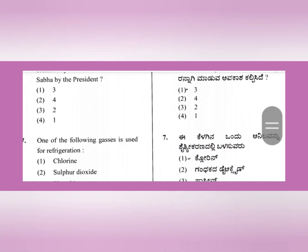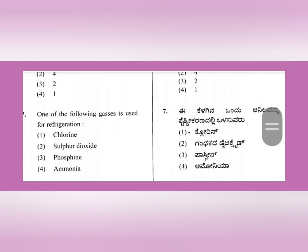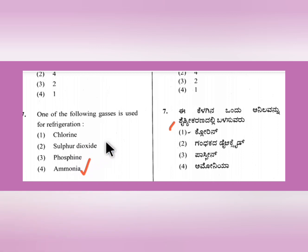Question 7: One of the following gases is used for refrigeration. The answer is ammonia - ammonia is used in refrigeration. We can also expect other science questions. There are many reference books for GPSTR and TRK that you can go through. These will cover basic science concepts.